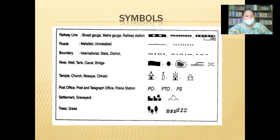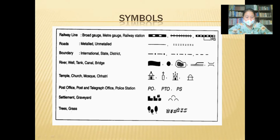Standard symbols include railway lines, roads, boundaries, rivers, wells, temples, churches, post offices, settlements, graveyards, trees, and grass. For example, to show a church on a map, we can just put a cross at that spot instead of writing the word 'church' there.